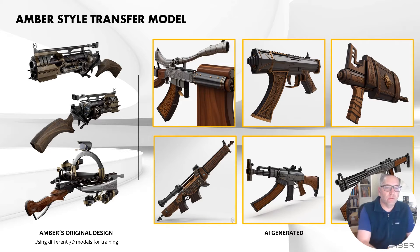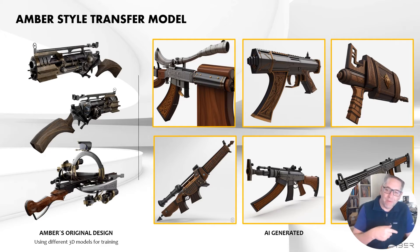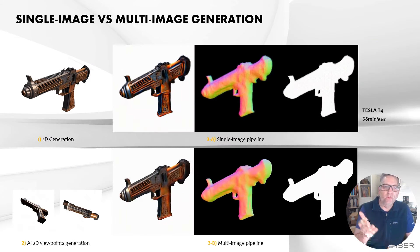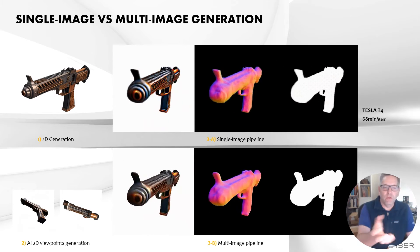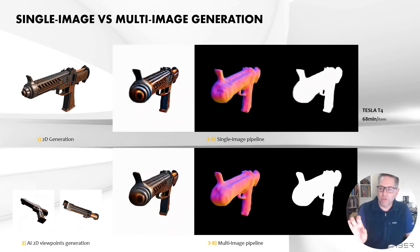Starting with original designs — these are weapons done by our 3D artists at Amber. We feed those 2D images of the 3D objects we made into a model, so we're able to generate more. Same deal with a sci-fi look. Then we take that 2D generative version and make it into a 3D mesh.